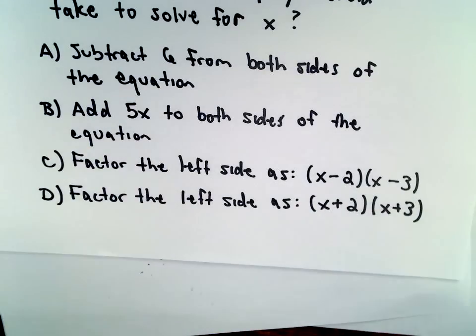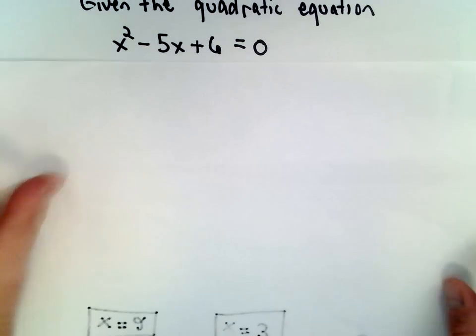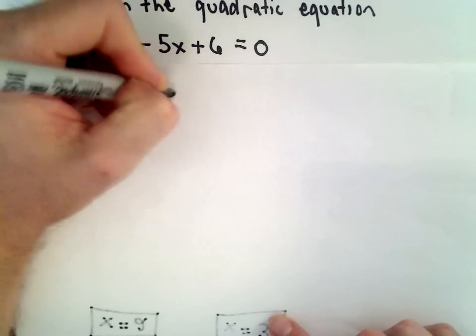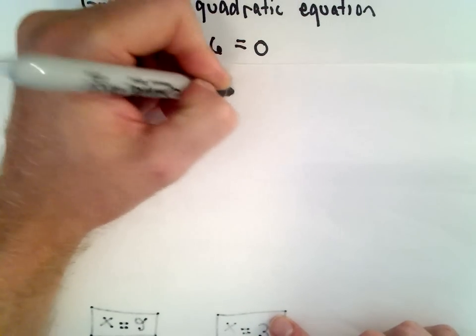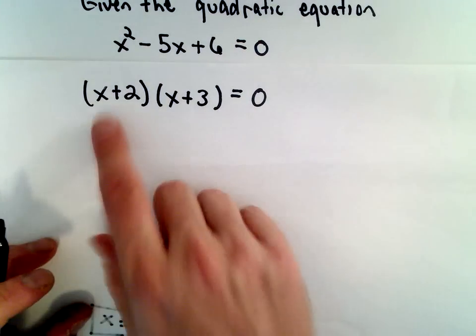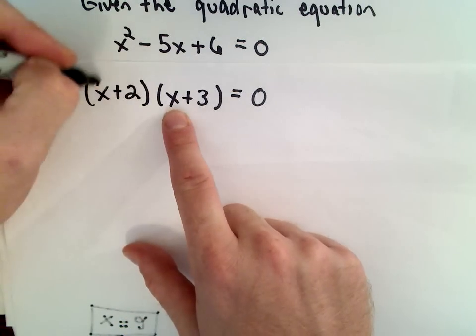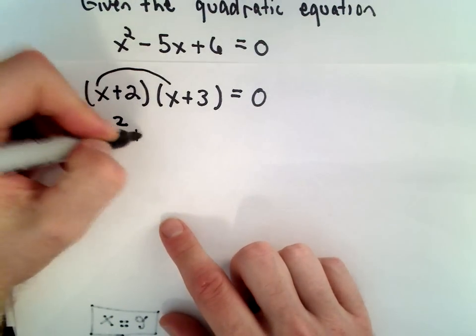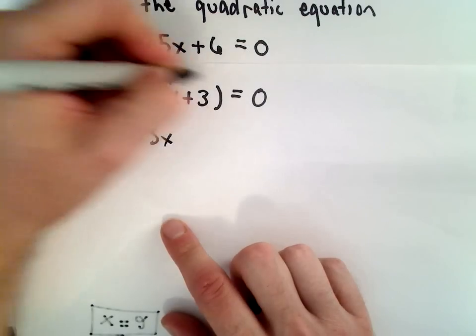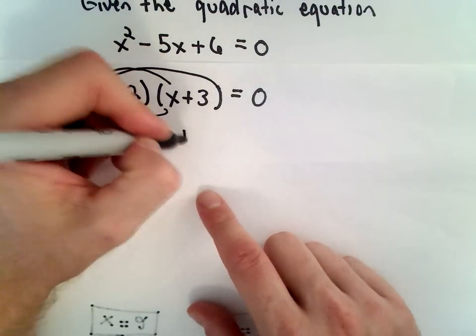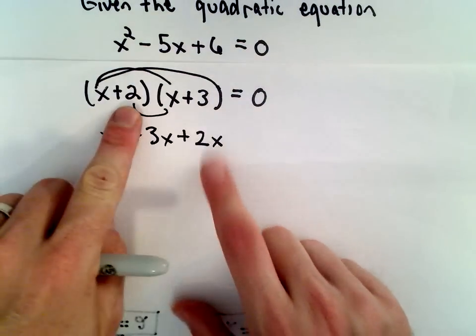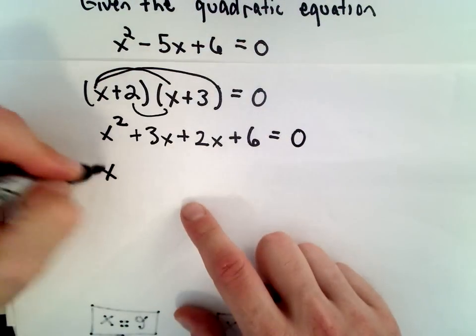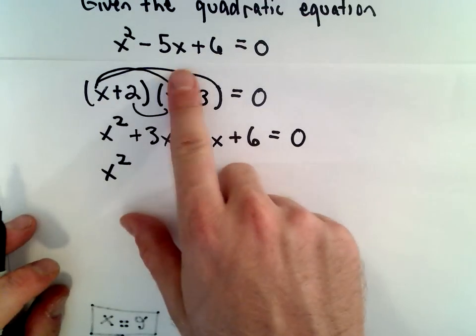Let's look at part D. It says factor it as x plus 2 multiplied by x plus 3. Unfortunately, that's simply not a correct factorization. Because if we distribute, x multiplied by x will give us x squared. x multiplied by positive 3, that'll be positive 3x. 2 multiplied by x will give us positive 2x. And then 2 multiplied by positive 3 will be positive 6.